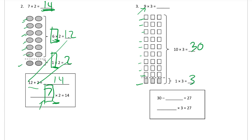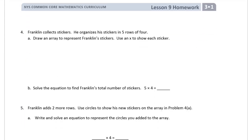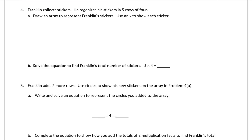We're not adding a row like in number two — we're going to subtract it. The whole array is thirty, and we subtract one row which is three. Thirty minus three is twenty-seven. We started with ten rows of three and subtracted one row of three, so ten minus one is nine — nine rows of three for twenty-seven. We can put twenty-seven up here.